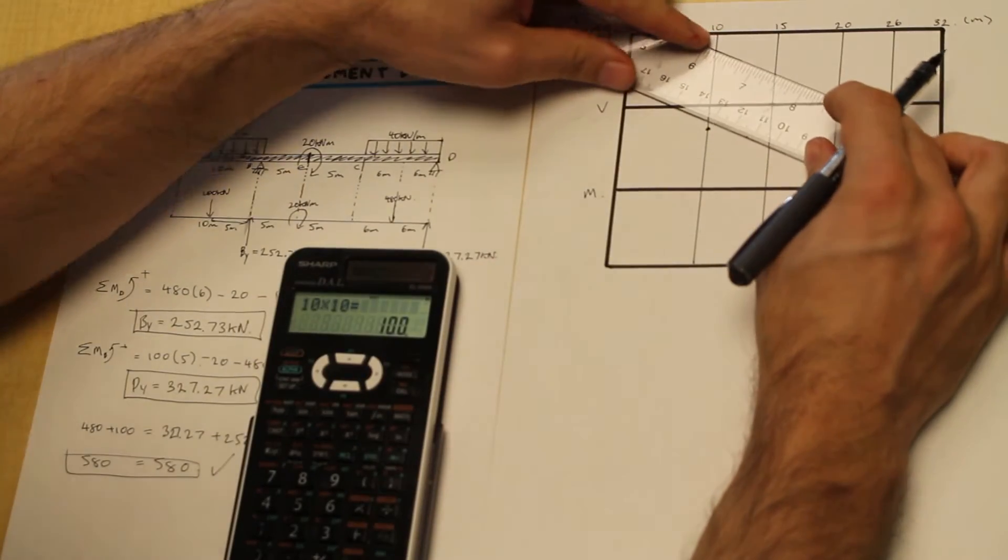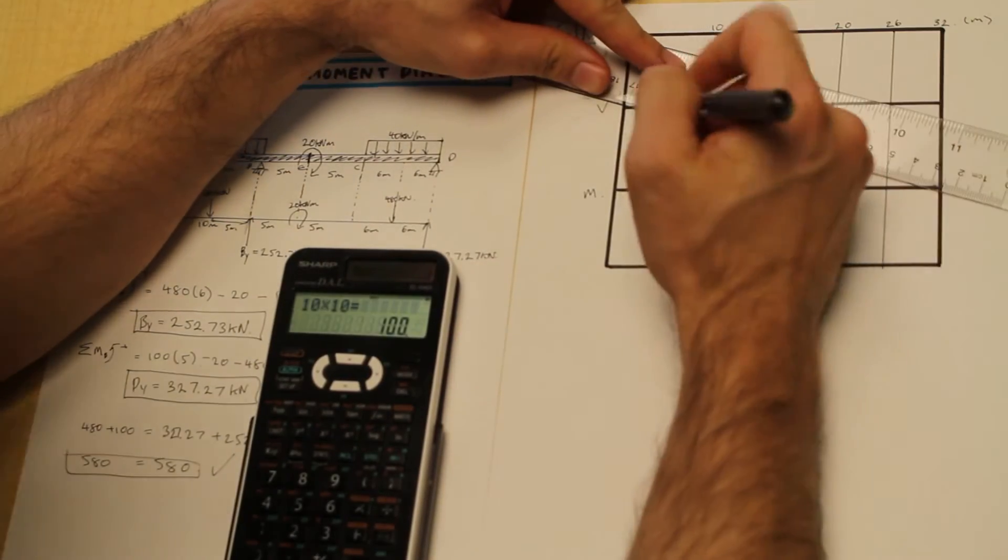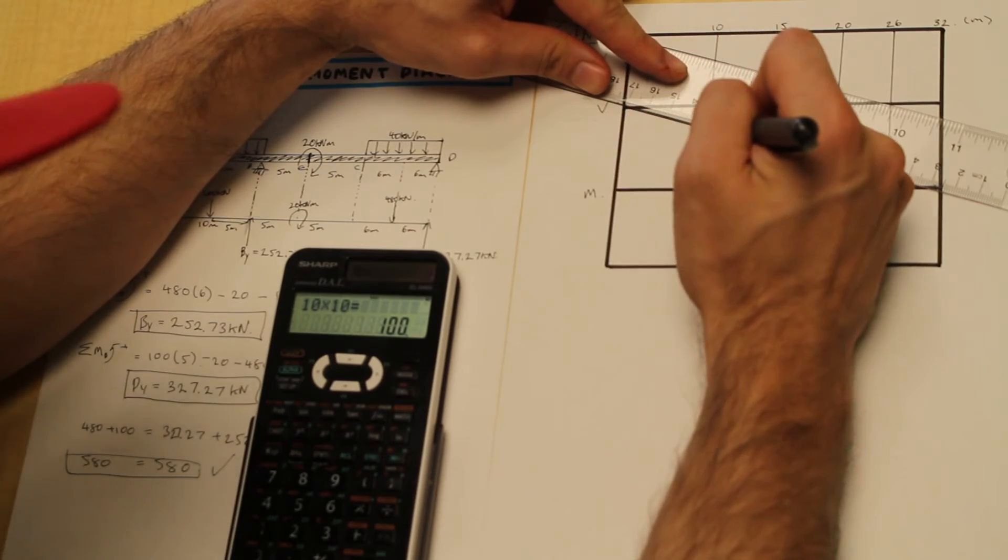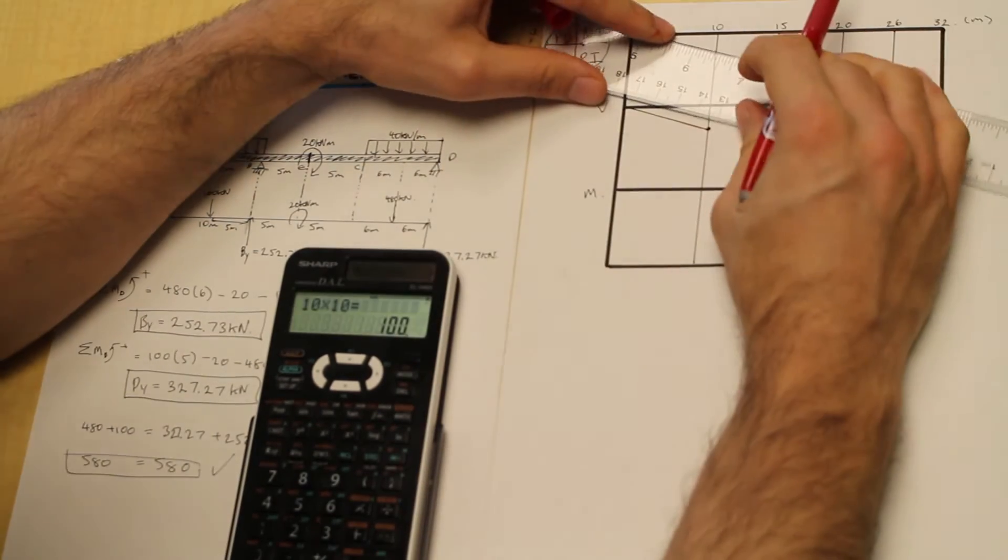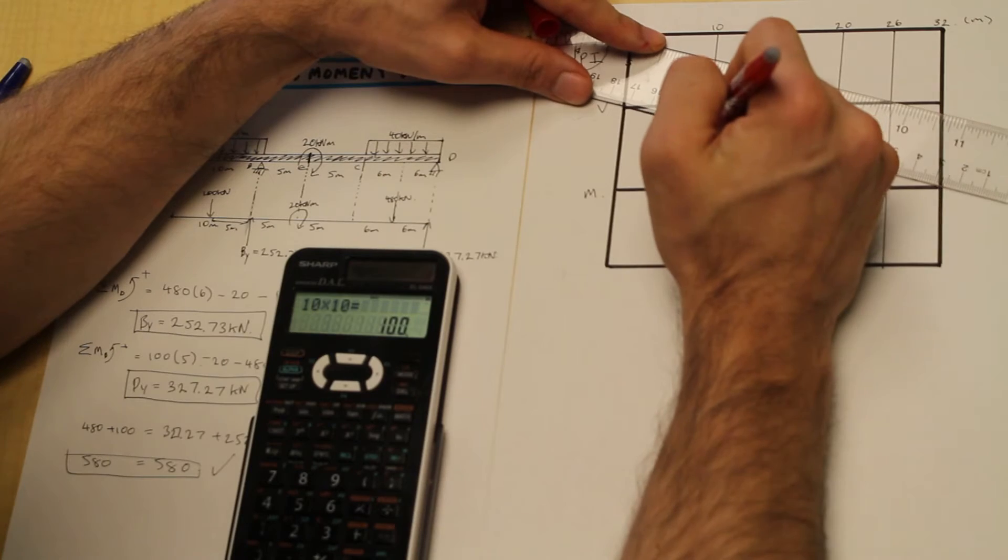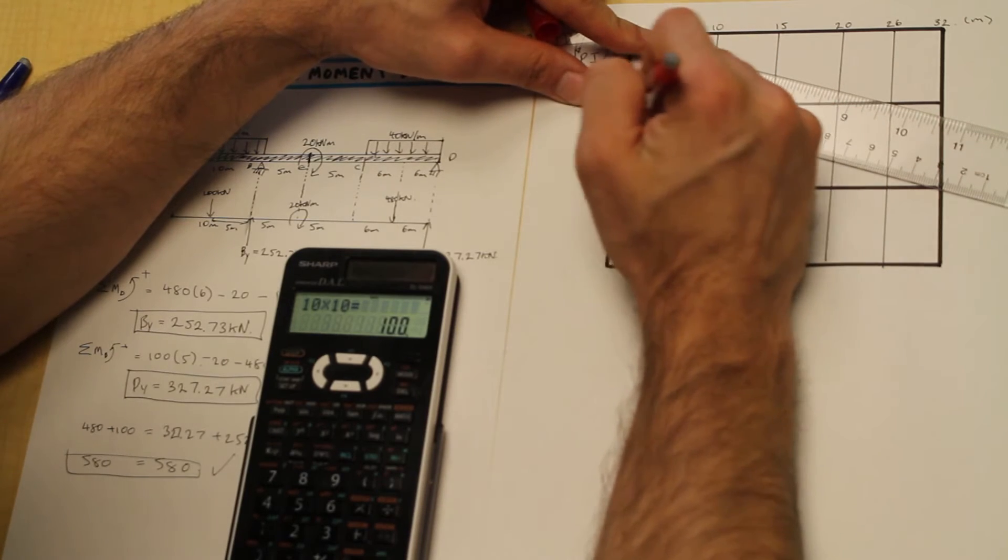So we see that if we have a distributed load acting downwards at 10 kilonewtons per meter for 10 meters, we're going to multiply 10 by 10 and we're going to get 100 and that's down. So it's going to be negative. So we know that we can come over to 10 meters and guys, this is meters here. I've just written as we go through the beam, how far we are. And that's as simple as that.